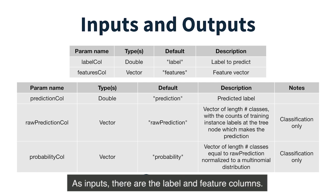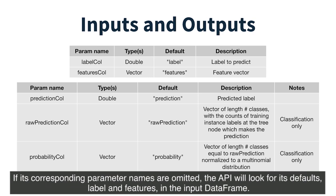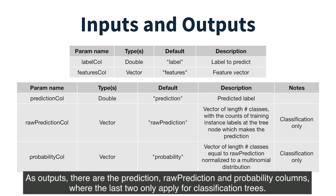As inputs, there are the label and feature columns. If the corresponding parameter names are omitted, the API will look for its defaults — label and features — in the input DataFrame. As outputs, there are the prediction, raw prediction, and probability columns, where the last two only apply for classification trees.